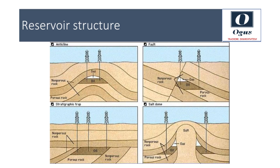In a stratigraphic trap, variations within the rock strata themselves — for example, a change in the local porosity and permeability of the reservoir rock, a change in the kinds of rocks laid down, or a termination of the reservoir rock — play an important role in stopping the migration and causing accumulation of oil and gas.